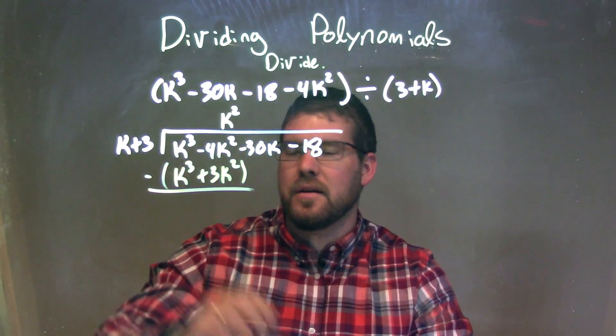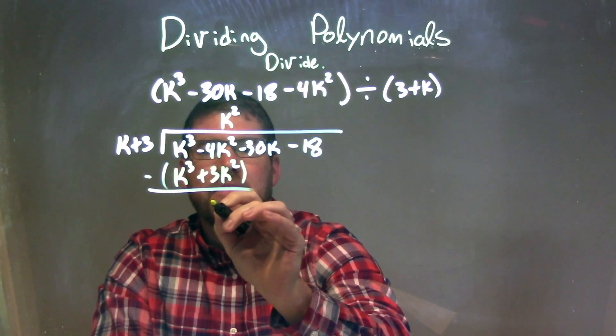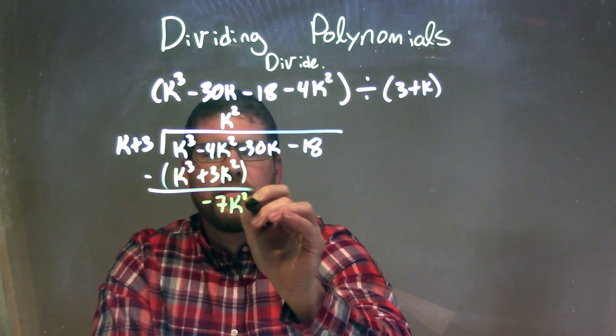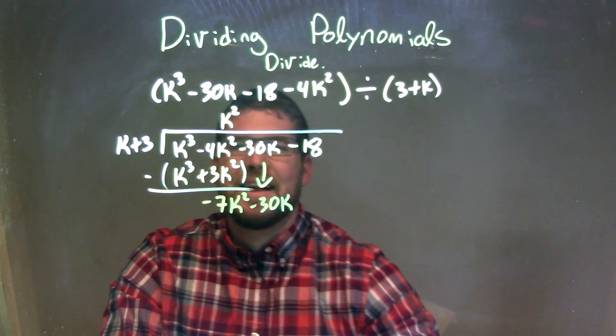Fantastic, great. Minus 4k squared minus 3k squared is a minus 7k squared. I'm going to bring down the minus 30k now, and that's the same question again.